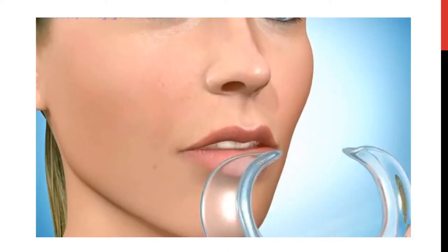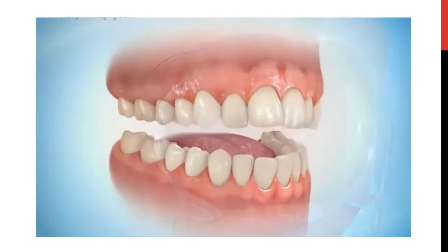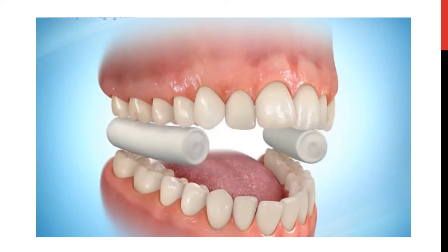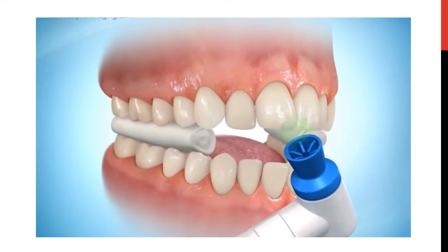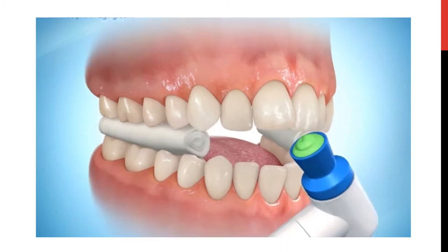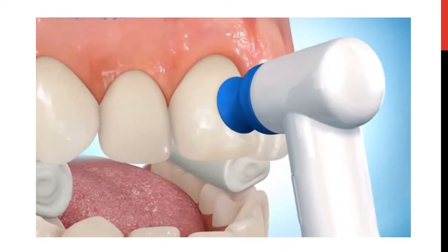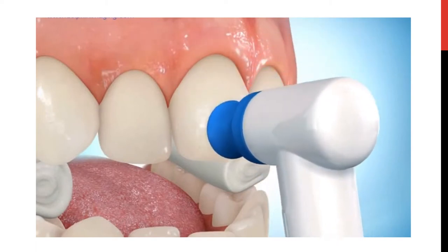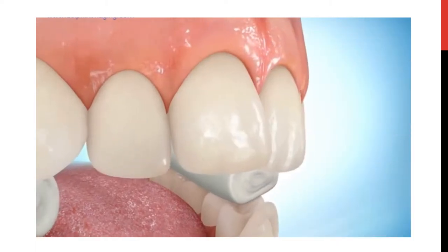This video demonstrates the direct bonding procedure. We start by cheek retracting and having proper moisture control, then cleaning of teeth surfaces to remove any pellicle using a slow handpiece and a prophy brush or cup. The enamel surface is treated either the conventional way by acid etching, washing, and drying.